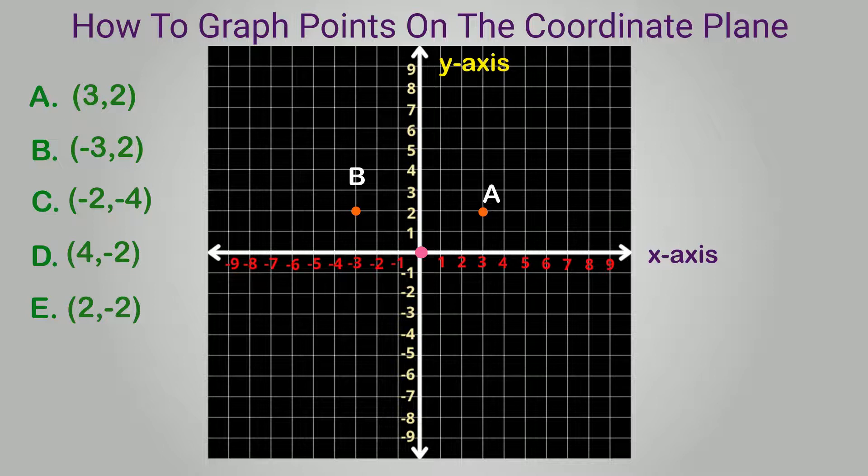Next example. Graph the coordinates negative 2, negative 4. We move to the left two spaces because the x value is negative. The y value is negative, so we move down 4. This is our point for negative 2, negative 4, and it's located in quadrant 3.